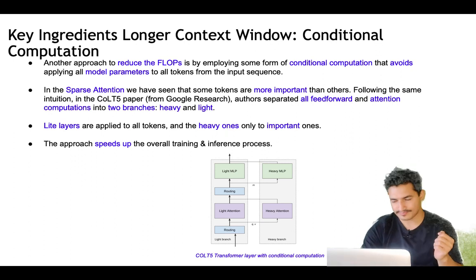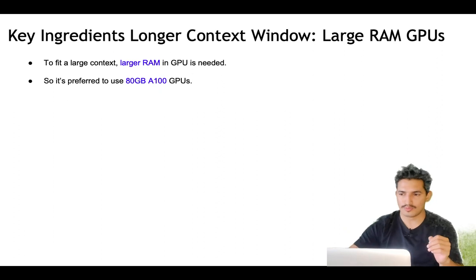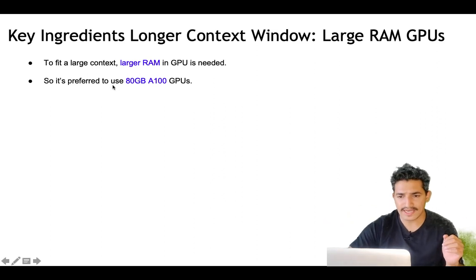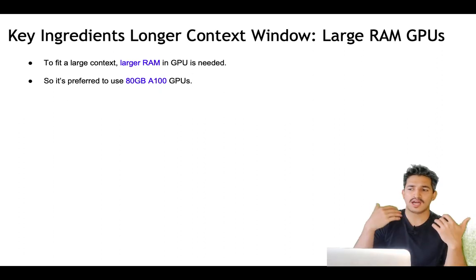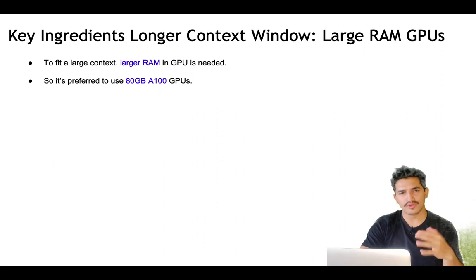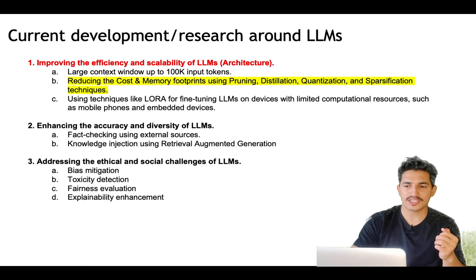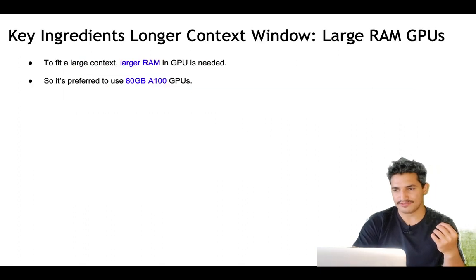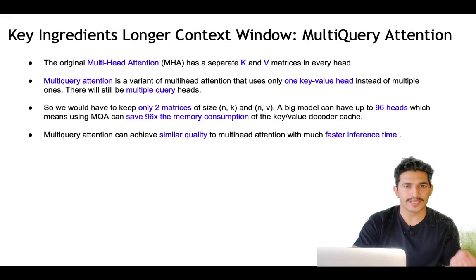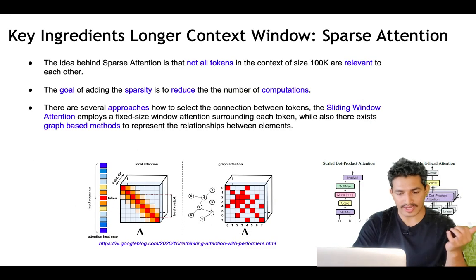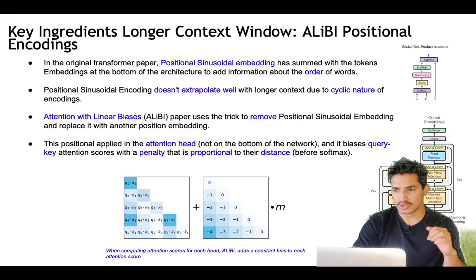Another ingredient is larger RAM GPUs — to fit a large context, more memory is needed, such as 80GB A100 GPUs with higher memory. To summarize, we've seen how to enable a large context window of up to 100k input tokens through: ALiBi positional encoding instead of sinusoidal embeddings, sparse attention, flash attention, multi-query attention instead of multi-head attention, conditional computation, training on 2k tokens and fine-tuning on longer context, and using larger RAM GPUs.